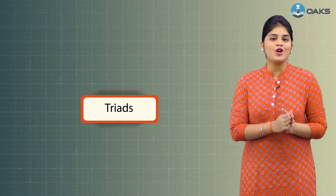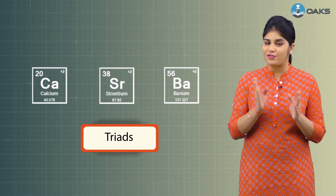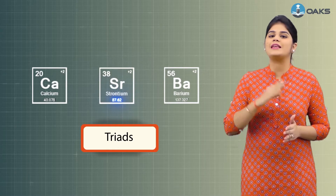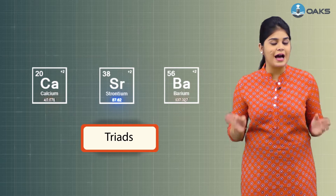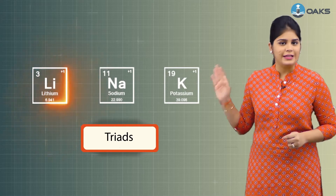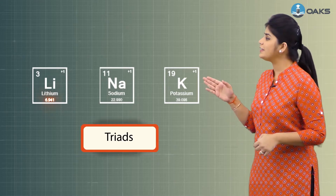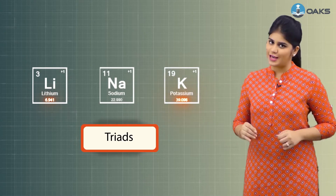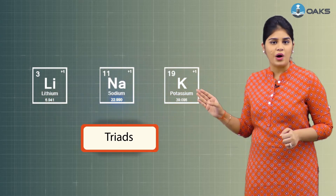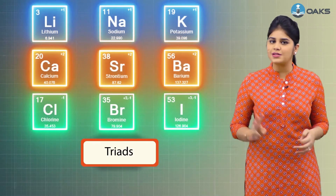He managed to arrange elements with similar properties into a group of three, calling them triads. He showed that when these three elements were arranged in increasing order of their atomic masses, the atomic mass of the middle element was the average of the other two. For example, in a triad with lithium, sodium, and potassium, the average of atomic masses of lithium and potassium was close to the atomic mass of sodium.